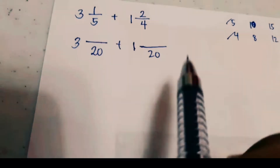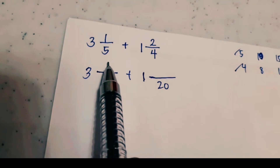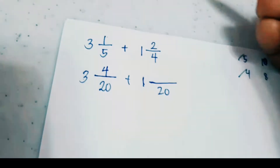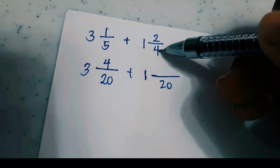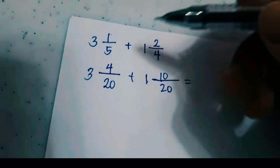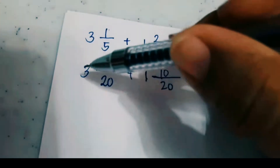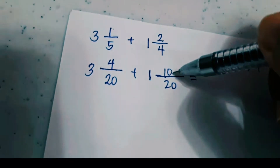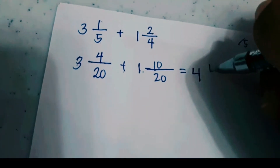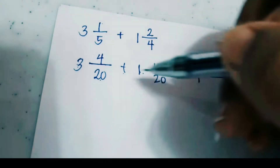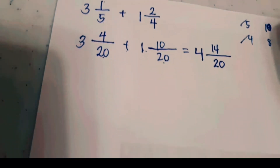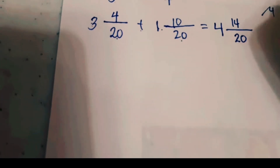The least common product of five and four is 20. Find the new numerators: 20 divided by 5 equals 4, times 1 equals 4. Then 20 divided by 4 equals 5, times 2 equals 10. Now add whole number to whole number and numerator to numerator. Three plus one equals four; four plus ten equals fourteen. Copy the denominator, giving you 4 and 14 over 20.